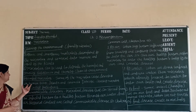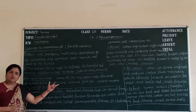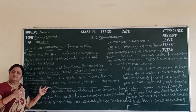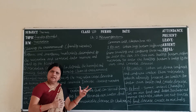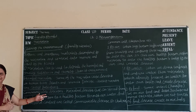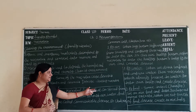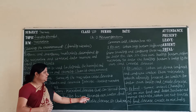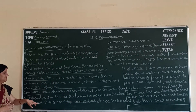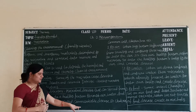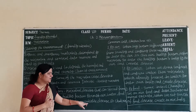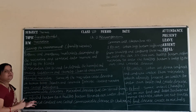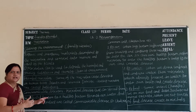Some microbes cause disease in human beings, plants, and animals. These disease-causing microbes are called pathogens. Pathogens means diseases which are created by microorganisms. Communicable diseases are microbial diseases that spread from an infected person to a healthy person through air, water, food, and physical contact.